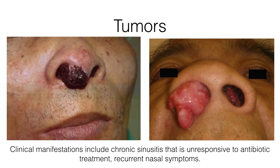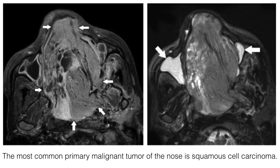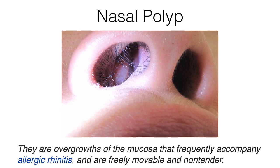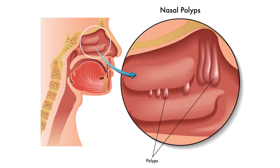Tumors: clinical manifestations include chronic sinusitis that is unresponsive to antibiotic treatment and recurring nasal symptoms. The most common primary malignant tumor of the nose is squamous cell carcinoma. Nasal polyps are overgrowths of the mucosa that frequently accompany allergic rhinitis and are freely movable and non-tender. Here's another picture of a nasal polyp and the different places where they can occur.